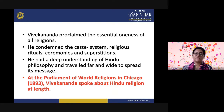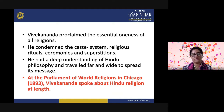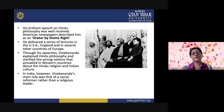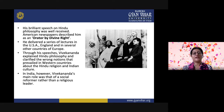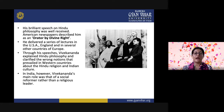Vivekananda went to Chicago to speak at the Parliament of World Religions, held in 1893, and spoke about Hindu religion at length. His brilliant speech on Hindu philosophy was well received, and American newspapers described him as an orator by divine right. He delivered a series of lectures in the USA, England, and several other countries of Europe. Through his speeches, Vivekananda explained Hindu philosophy and clarified the wrong notions that prevailed in Western countries about Hindu religion and Indian culture.